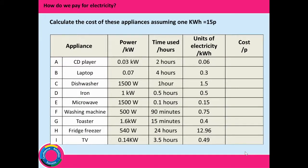Let's have a look at our answers. CD player: 0.9 pence. Laptop: 4.5 pence — these don't sound like much money. Dishwasher: 22.5 pence. Iron: 7.5 pence. Microwave: 2.25 pence. Washing machine: 11 pence for 90 minutes. Toaster: 6 pence. Fridge freezer: £1.94 — you can see it gets more expensive because that is over a 24-hour period. TV: 7.35 pence.